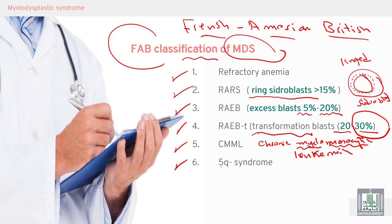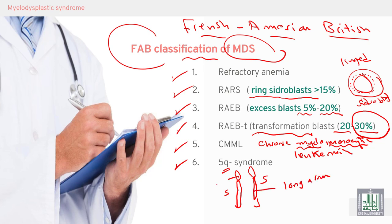MDS with 5Q-minus syndrome is a type of MDS characterized by deletion of part of chromosome 5. This results in an abnormal, shortened chromosome 5 due to deletion of part of the long arm. Q means the long arm — so the chromosome is shorter because of this deletion.